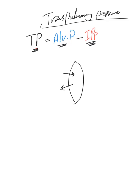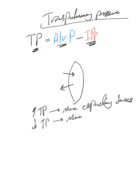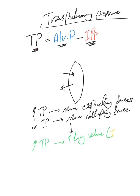The more transpulmonary pressure, that means there are more expanding forces. A decrease in transpulmonary pressure means more collapsing forces. This leads us to the conclusion that an increase in transpulmonary pressure will lead to an increase in lung volume or size — another term for this is inflation. The opposite, a decrease in transpulmonary pressure, will lead to a decrease in lung volume, which is called deflation.